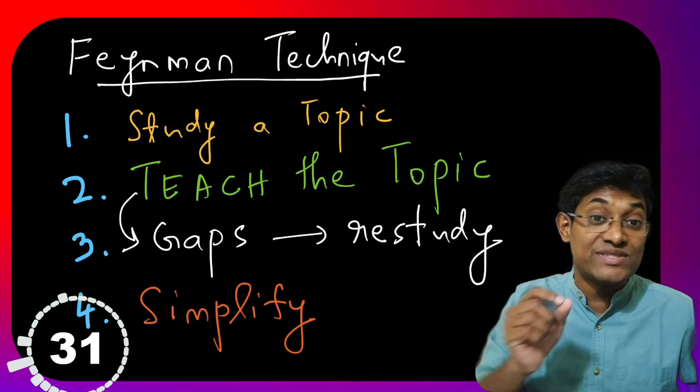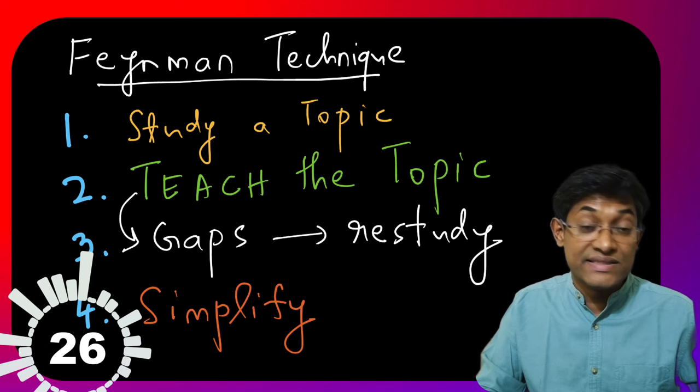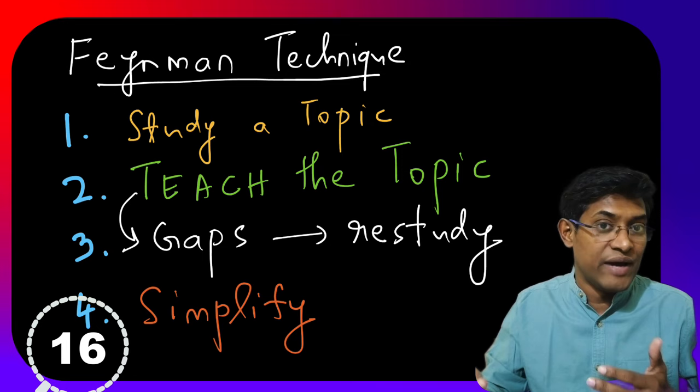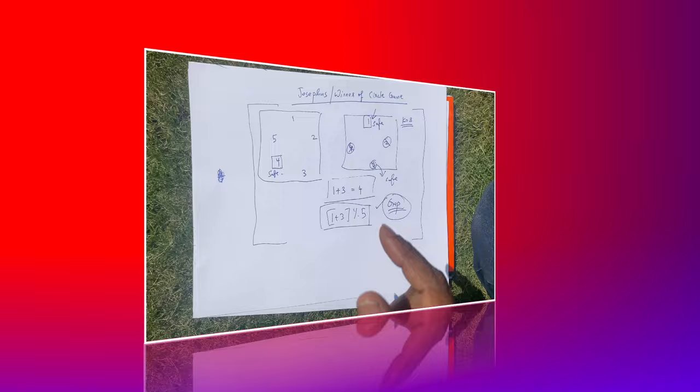Once you're done with this, we move on to step number four. The fourth and final step of the Feynman technique is that once you have understood the areas where your understanding was shaky or not solid, come back to the topic and try to teach the topic again in an imaginary manner. So you can take a piece of paper and again, speak out loud while you write on the piece of paper and try to teach the topic to somebody. But this time, simplify it. Don't use any jargons. Imagine you're teaching a 10 year old child.